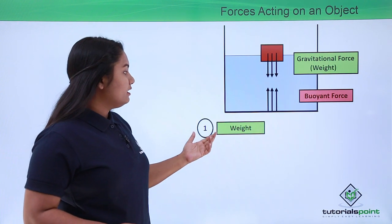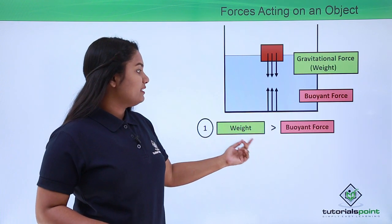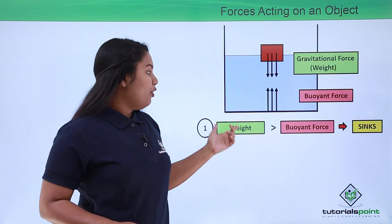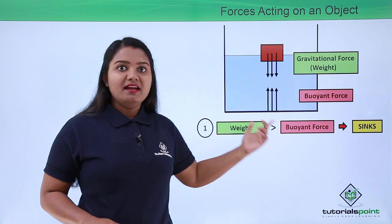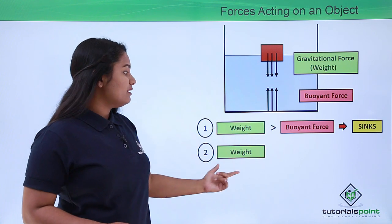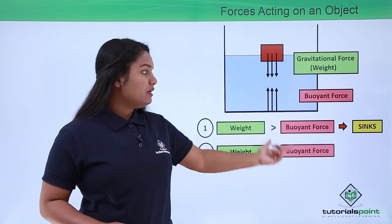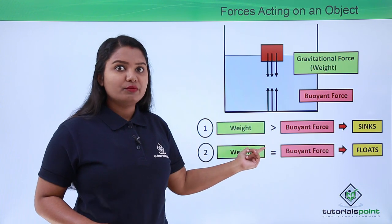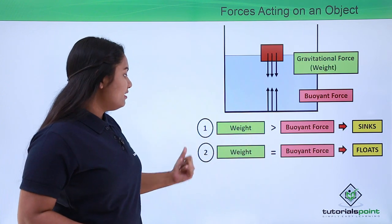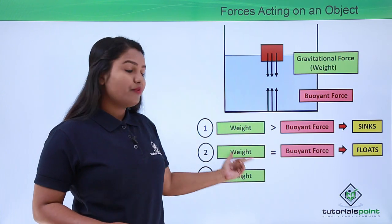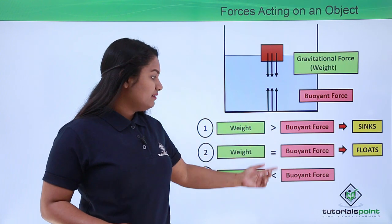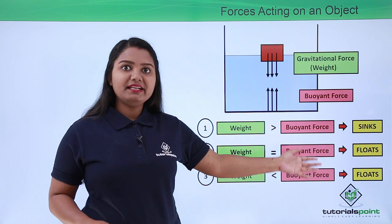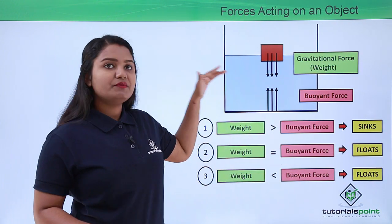We have learned that if the weight of the object is greater than the buoyant force, the object sinks. In the second case, if the weight of the object is equal to the buoyant force, the object floats. And in the third case, when the object's weight is less than the buoyant force, the object completely floats on the surface of the fluid.